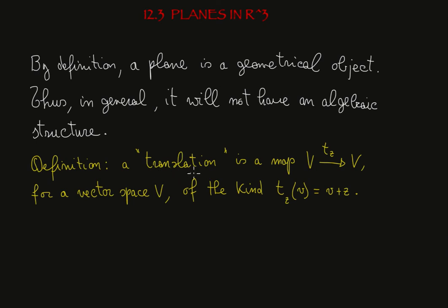Definition: a translation is a map from a vector space V to itself, called Tz, of the kind Tz(v) equals v plus z.